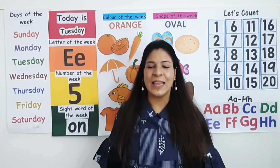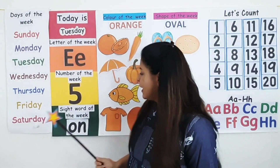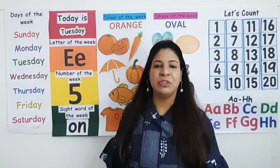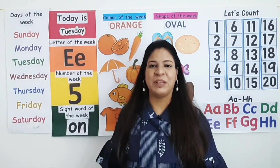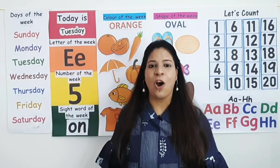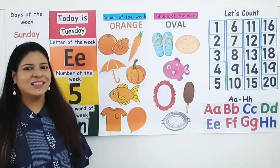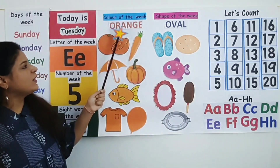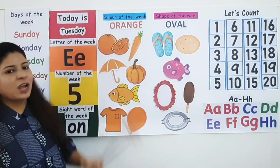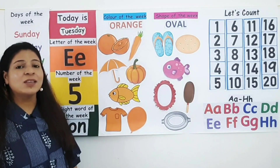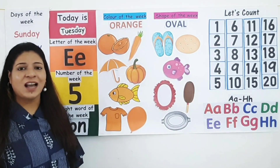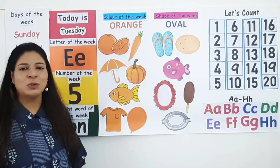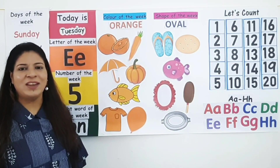Now let's see the sight word. Sight word of the week is 'on.' Repeat after me — on. Now let's see the color of the week. Color of the week is orange. Orange is a secondary color. We get orange color by mixing two colors — yellow and red.